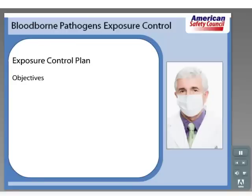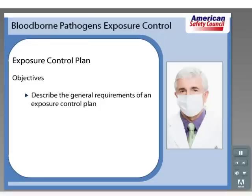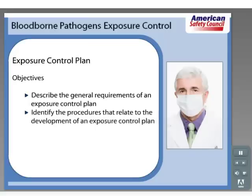Our objectives for this section are to describe the general requirements of an exposure control plan and identify the procedures that relate to the development of an exposure control plan. Let's start by thinking of examples in your facility of how employees could come in contact with blood or other potentially infectious materials. Write down some examples on the following slide and then click Submit.